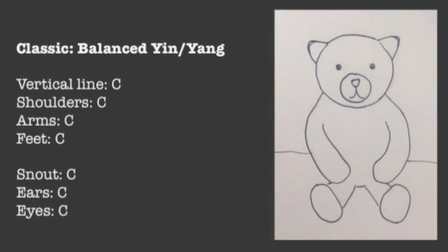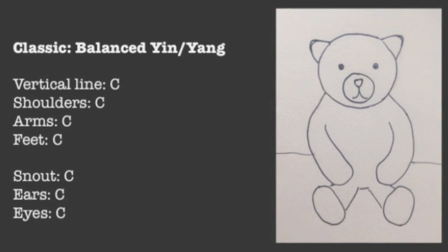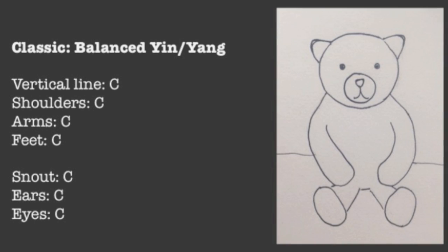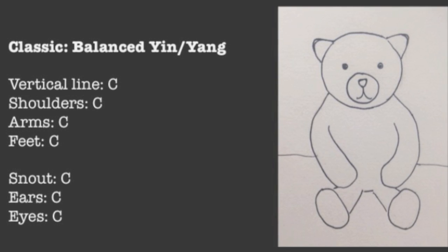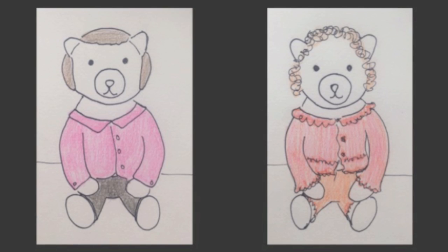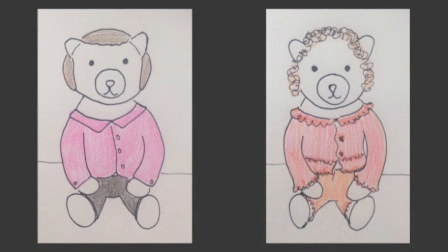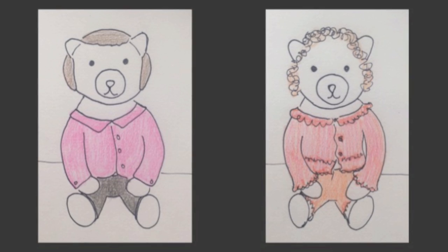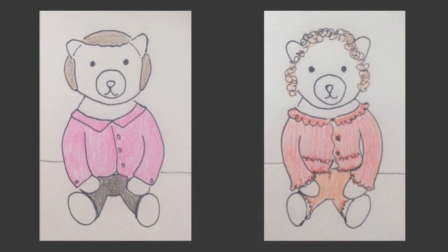Next up is a classic teddy bear. He doesn't necessarily have any sharp features nor any very rounded features - it's all pretty much in the middle. He doesn't have a long vertical line, but he doesn't look completely tiny either, so he is very balanced between yin and yang. When he puts on something very simple with no sharp geometrics but nothing too soft or frilly either, he looks amazing. On the right with something very frilly, he looks maybe a little bit overdone.